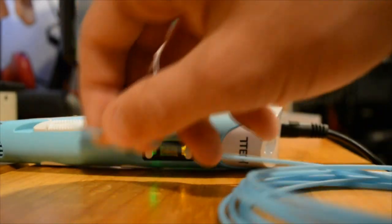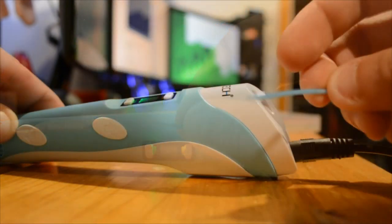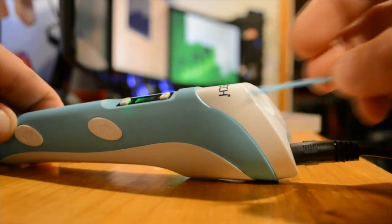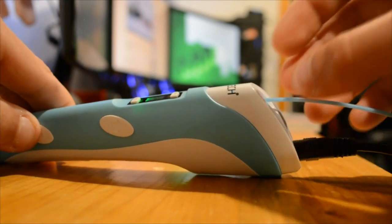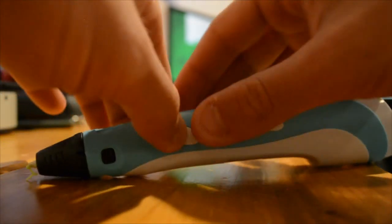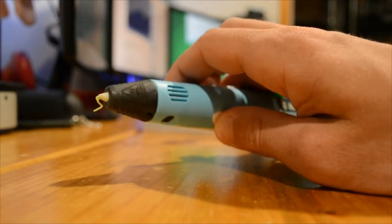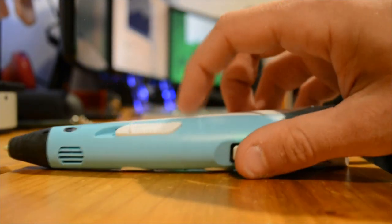So now all you have to do is put this in to start feeding it through. So next, what you want to do is put this through the little filament hole and hold down this arrow key and it's going to start feeding it through. Now you're going to have to wait a little bit for it to come out. And then once it starts coming out, you can start using it.